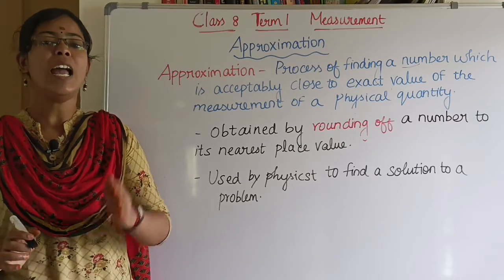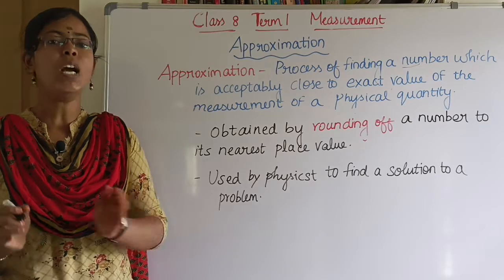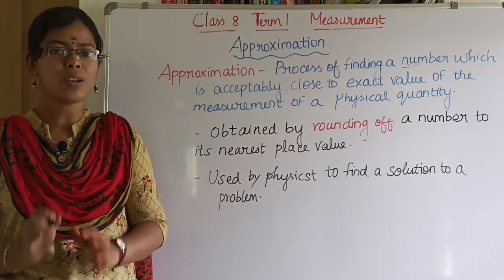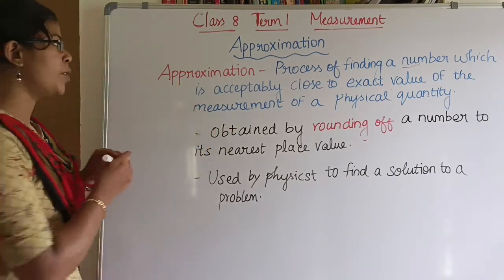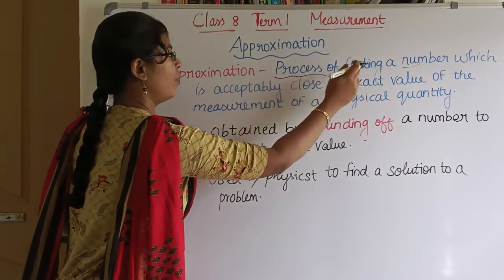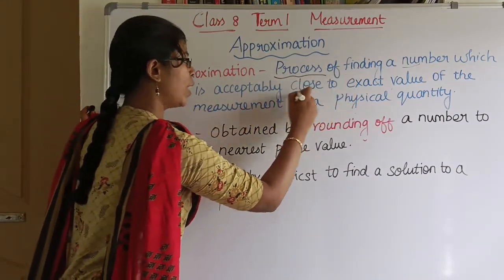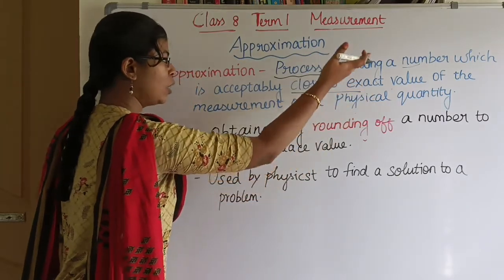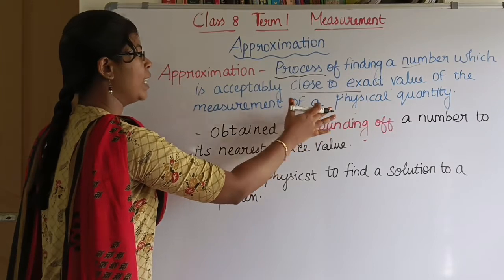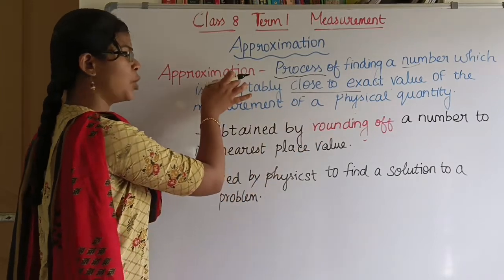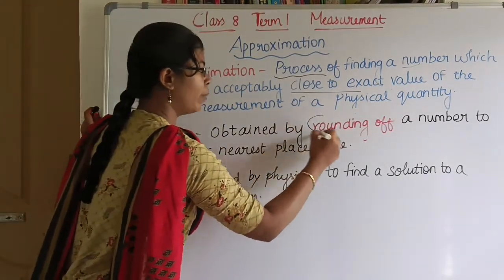That value is the exact value — it is called the actual value. Approximation is the process of finding a number which is acceptably close to the exact value. We will talk about the measurement of a physical quantity. Approximation is obtained by rounding off a number.